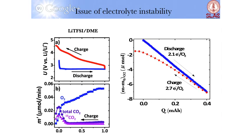The other piece of evidence is the electron production, which gives a good handle on what is happening in the chemistry. When you discharge, you have almost perfect chemistry. When you charge, you start to deviate. And so this is the picture that we put together.